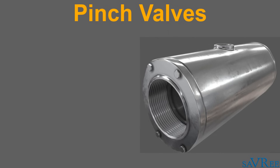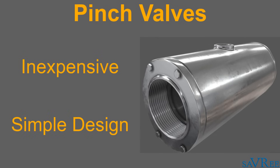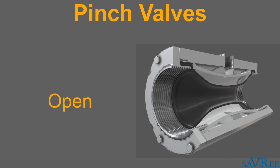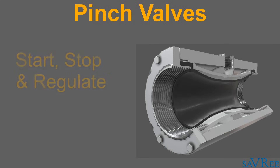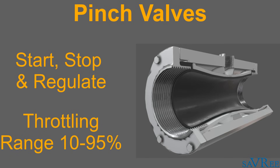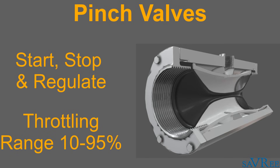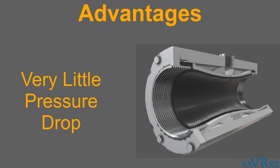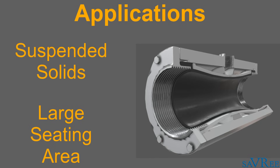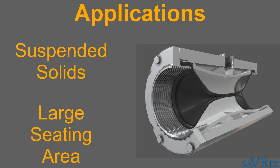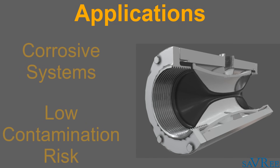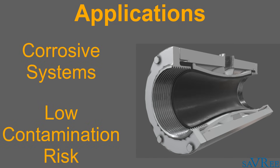Pinch valves are inexpensive and are the simplest of any valve design. The pinch control valve consists of a sleeve molded of rubber or other synthetic material and a pinching mechanism. Pinch valves can be used to start, stop or regulate flow; however, the effective throttling range is usually between 10% and 95% of the rated flow capacity. There is almost no pressure drop across a pinch valve. Pinch valves are ideally suited for handling slurries with large amounts of suspended solids due to their very large seating area. Because the operating mechanisms are completely isolated from the flowing medium, these valves are very well suited where corrosion or metal contamination might be a problem.